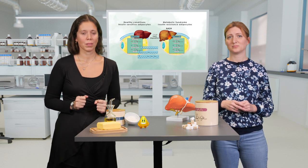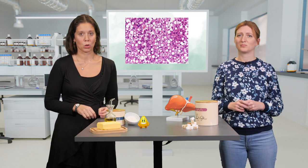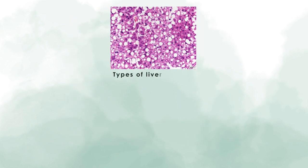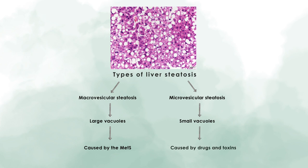Let's talk more in detail about steatosis. Steatosis is the accumulation of triglycerides in the liver. In histological sections, these can be seen as vacuoles which look empty under the microscope. There are two different types of steatosis according to the size of the vacuoles: macrovesicular steatosis, characterized by large vacuoles, typically caused by the metabolic syndrome; and microvesicular steatosis, characterized by small vacuoles, normally caused by drugs and toxins. In the exercise, you can find the histological criteria for the diagnosis of steatosis.